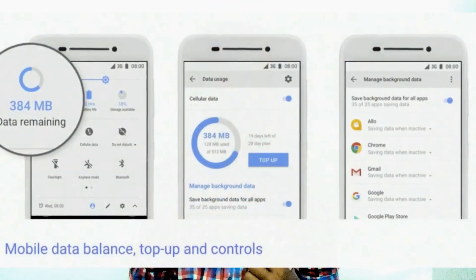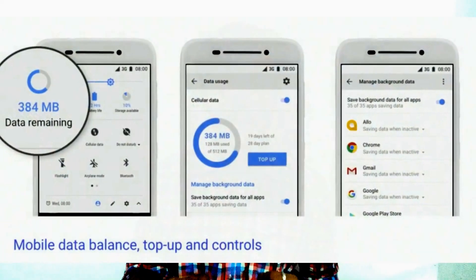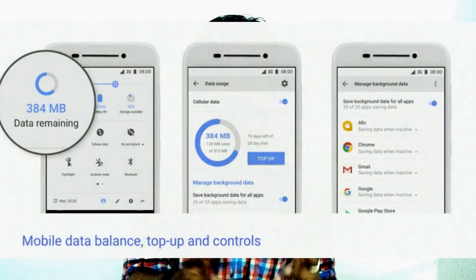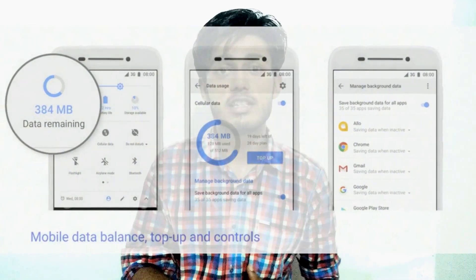In terms of storage space, when you install many apps, you often get a message saying insufficient storage. But with this OS, that message will not appear. You can install many apps and use them because they will be designed for Android Go — those apps will be lightweight. One example of such an app is YouTube Go, which will reduce its features and be delivered in Android Go.